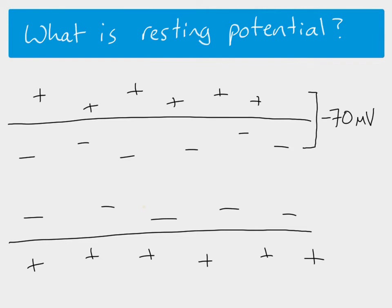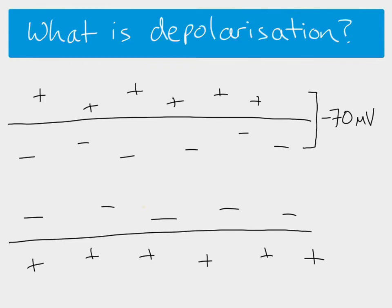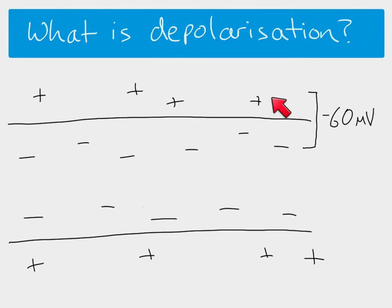What we want to look at next is something called depolarization. Depolarization happens as a result of some kind of stimulus. When that happens, we see a change in the potential difference — the voltage. We've gone from minus 70 to now minus 60. It doesn't have to be minus 60, but the point is that depolarization happens. The difference in the charge becomes more positive — it moves towards the positive side. It's a bit like saying there aren't as many positive charges on the outside compared to the inside. We still have positive relatively on the outside and relatively more negative on the inside, but the difference is not quite as great.